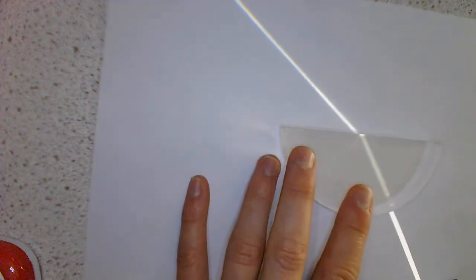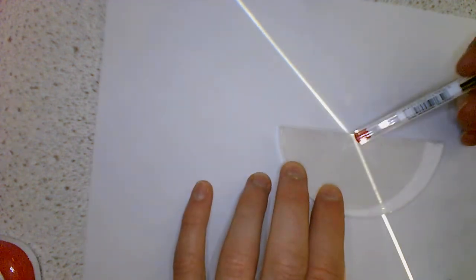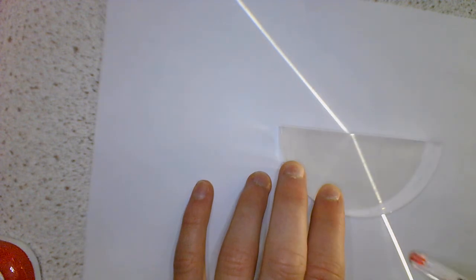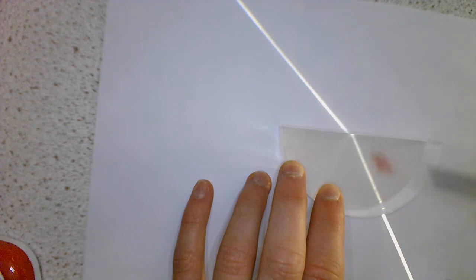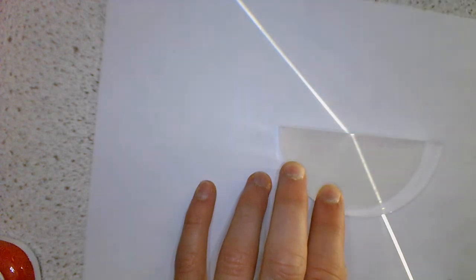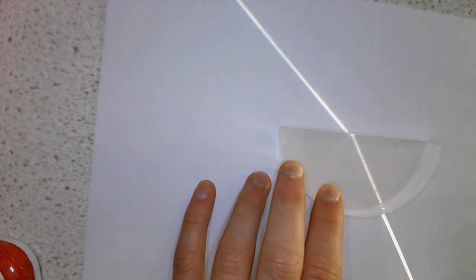So previously we were looking at what was happening on this boundary over here. Light is coming in, it's going straight through this boundary because it comes in along the normal, and then it's refracted here, so nothing surprising. It's going from glass into air so it bends away from the normal.